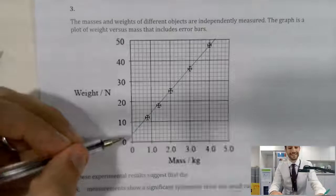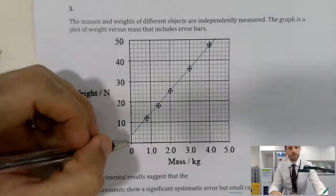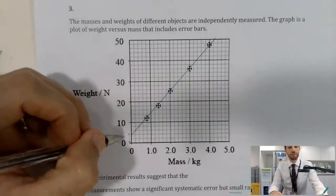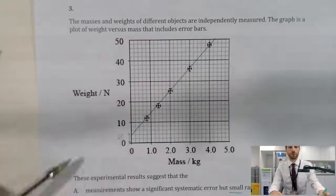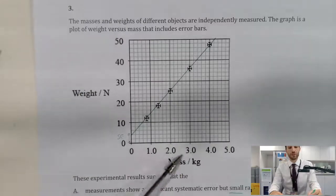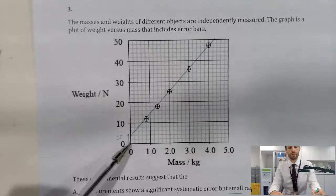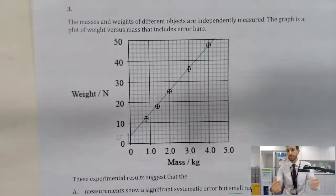However, there is a significant systematic error because we haven't crossed the origin. Obviously, if the mass of an object is zero, we expect its weight to be zero. However, this data is not showing that, and there's clearly been some problem when you deal with it.